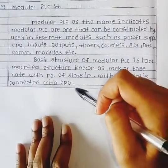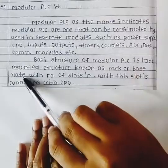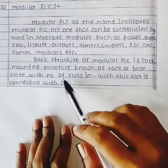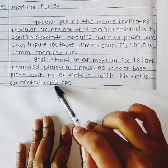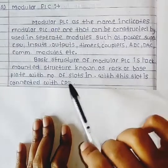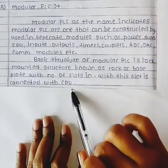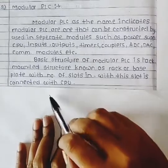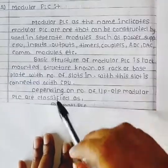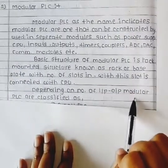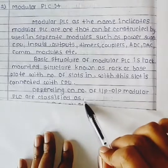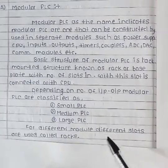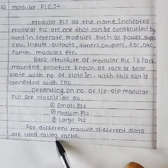The basic structure of modular PLC is a rack-mounted structure. This structure is known as a rack and base plate, with a number of slots in which the CPU is connected. Depending on the number of inputs and outputs, modular PLCs are classified as small PLC, medium PLC, and large PLC.